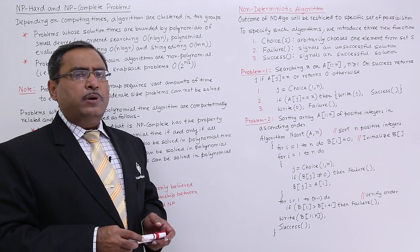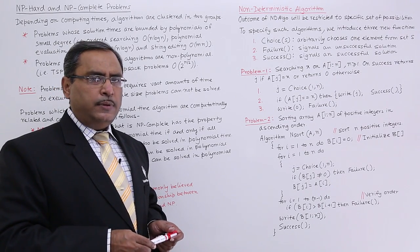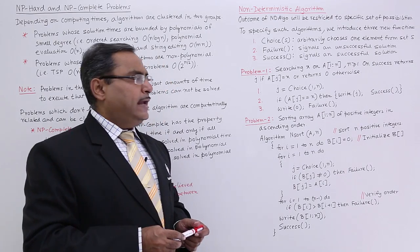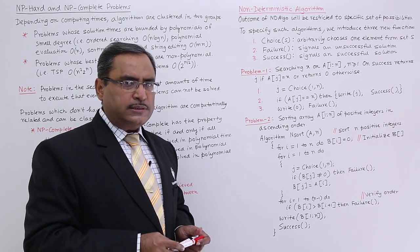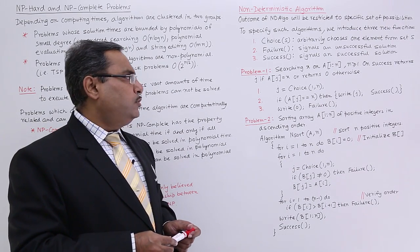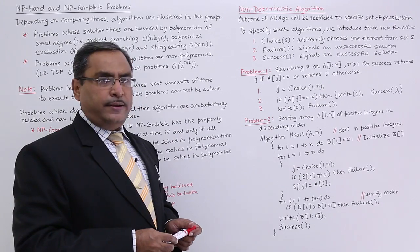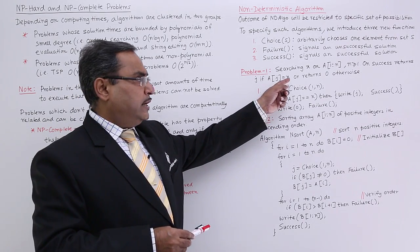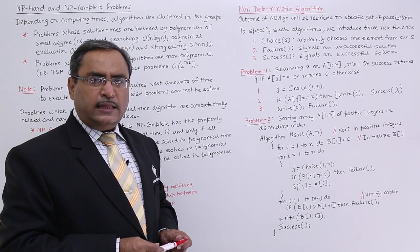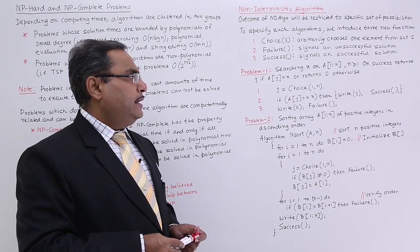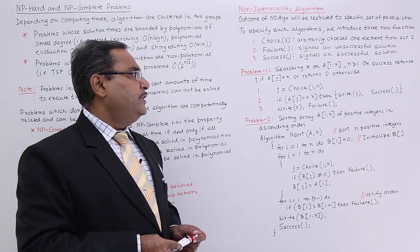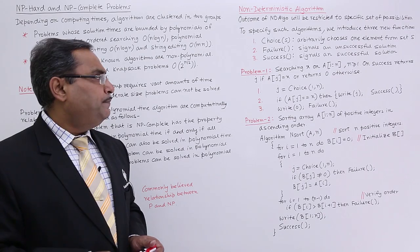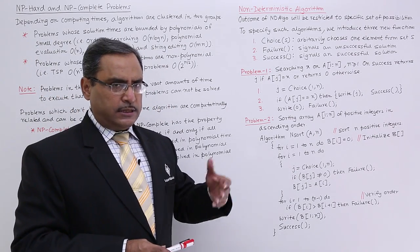Let us go to problem number 1, which is a searching algorithm written with a non-deterministic flavor. We are searching x in array a, where a has subscript ranging from 1 to n, and n is greater than or equal to 1. On success it returns j if a[j] equals x, or returns 0 otherwise.